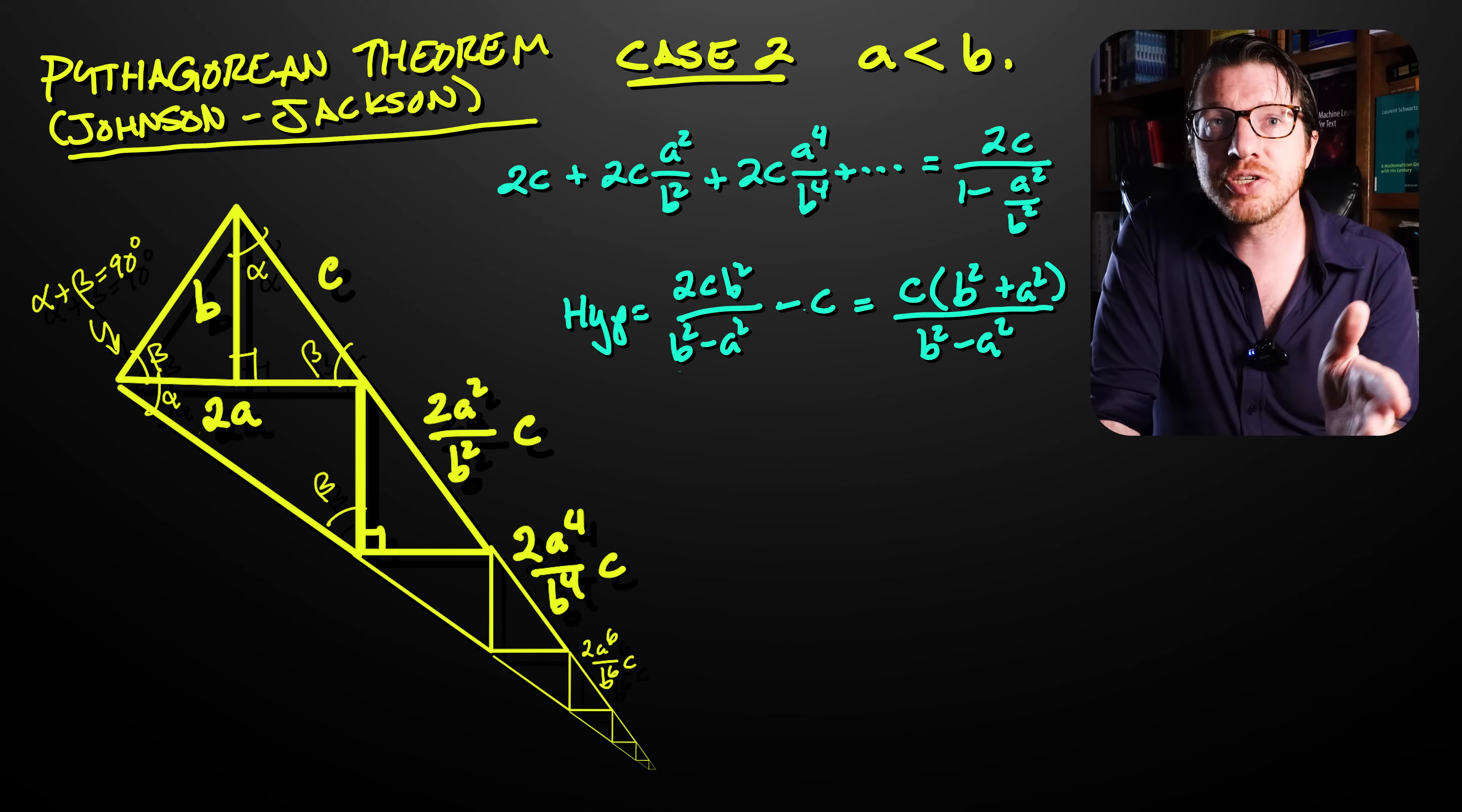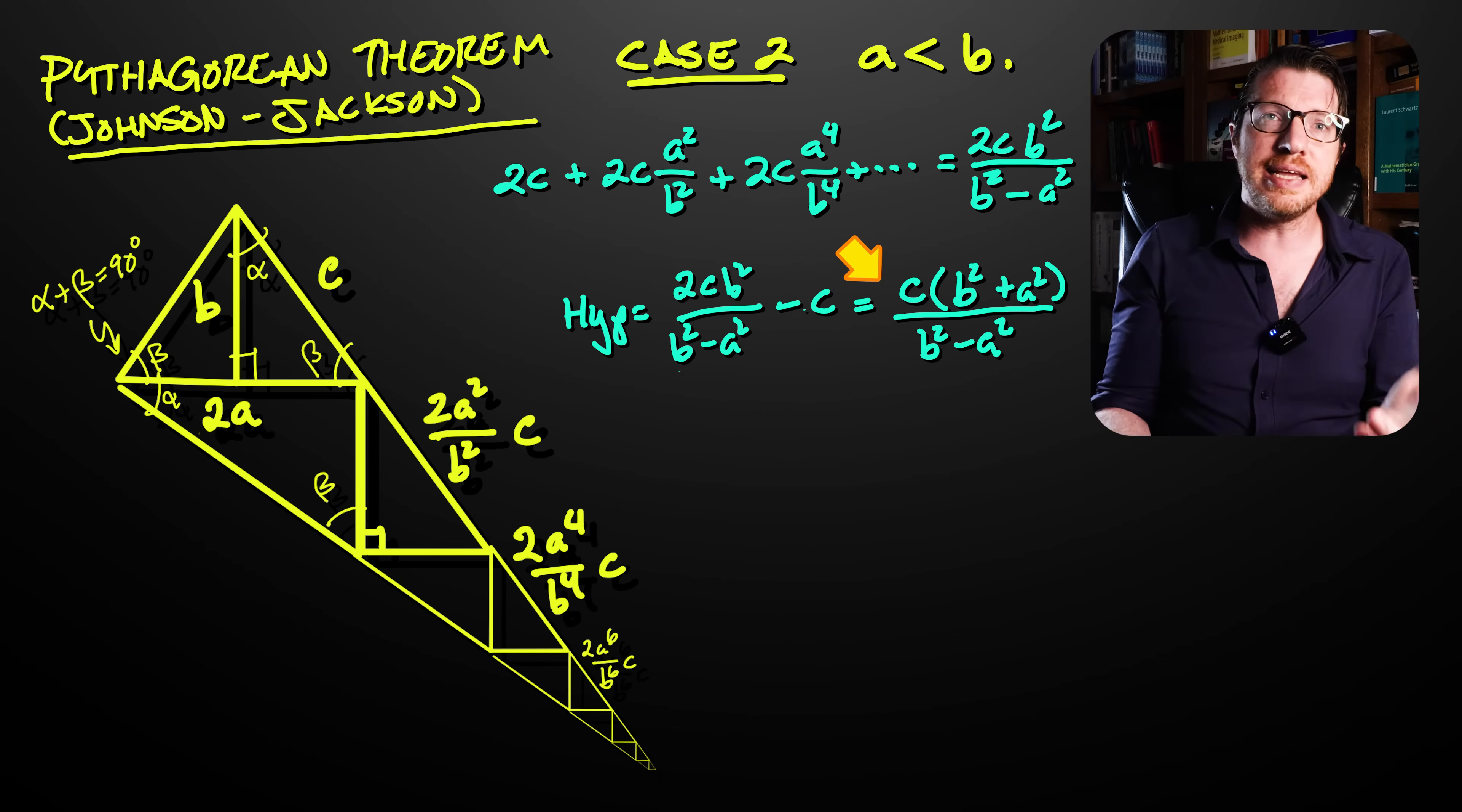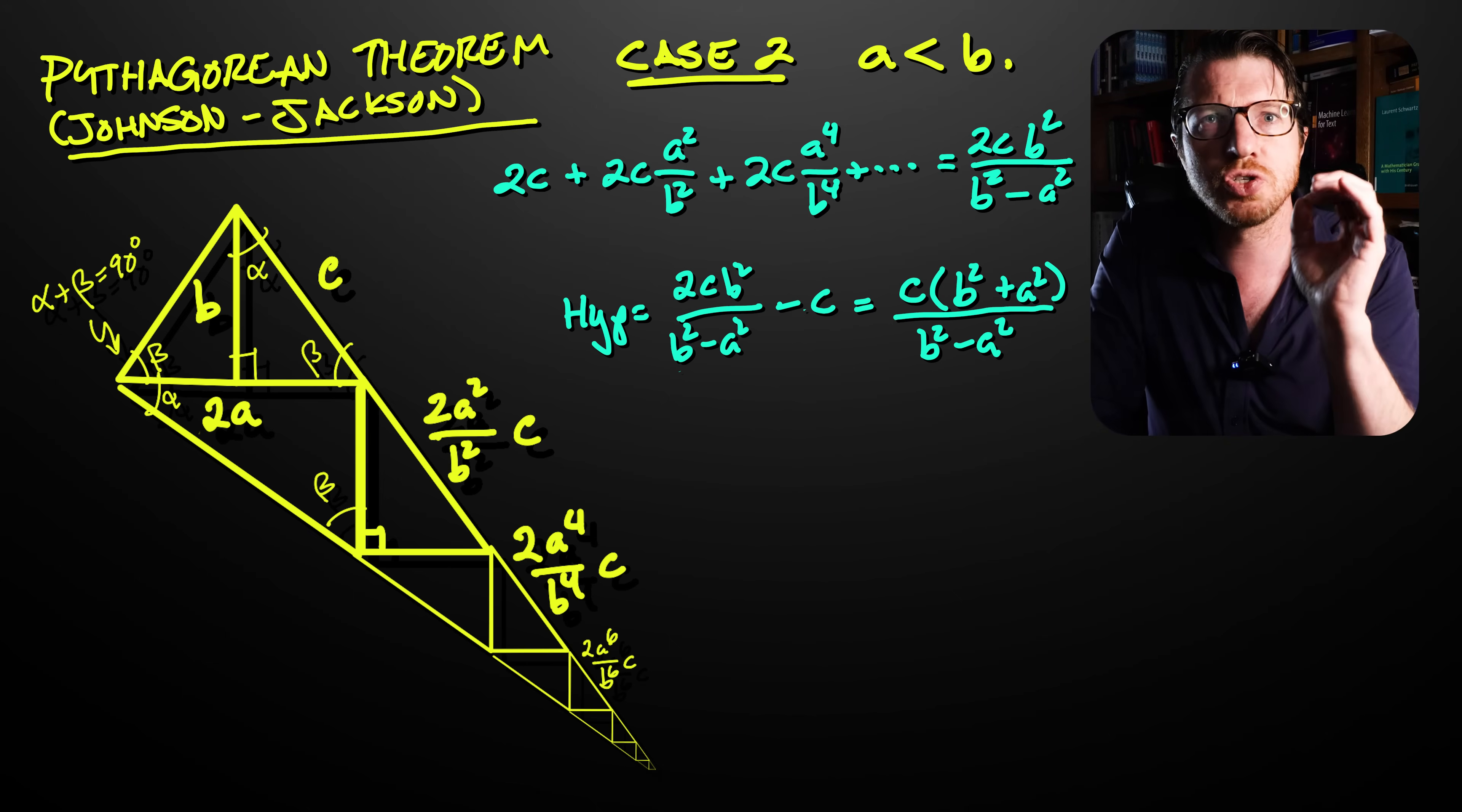So the actual length is that sum minus c. After a bit of simplification, we get 2c times b squared divided by b squared minus a squared and then that quantity minus c. And after finding a common denominator, we get c times b squared plus a squared divided by b squared minus a squared. And that is very heartening because we are starting to see that a squared plus b squared pop up in here.